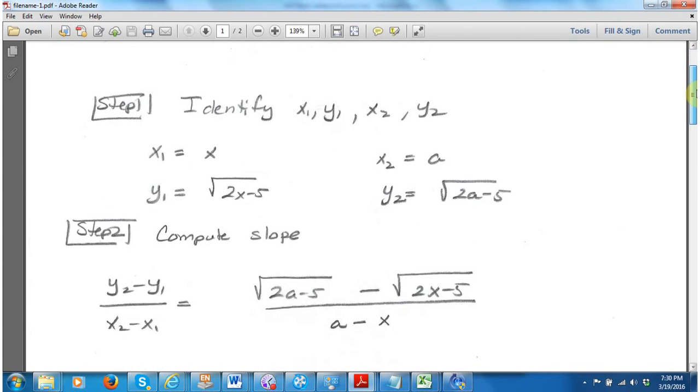Next step is to compute the slope. This is the slope of the secant line. And the very last step is, of course, to let a slide to x. So here we take y2 minus y1 over x2 minus x1. I just grab those things from step 1 and plug them into place.